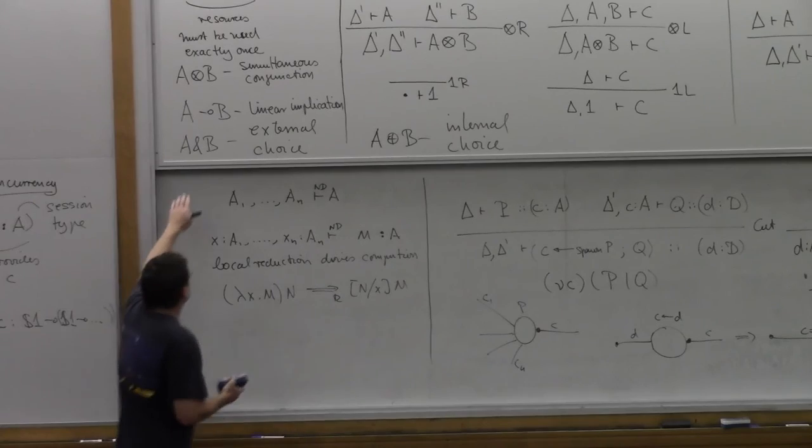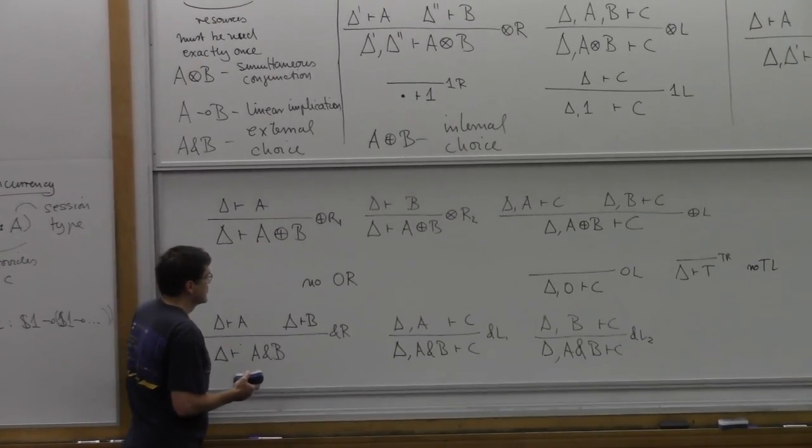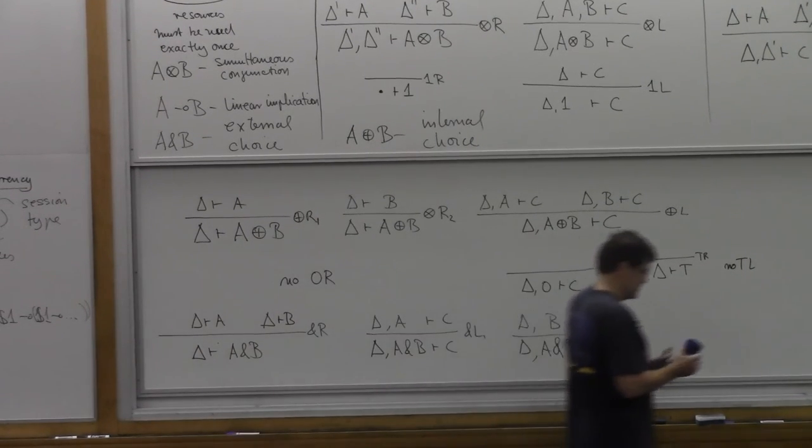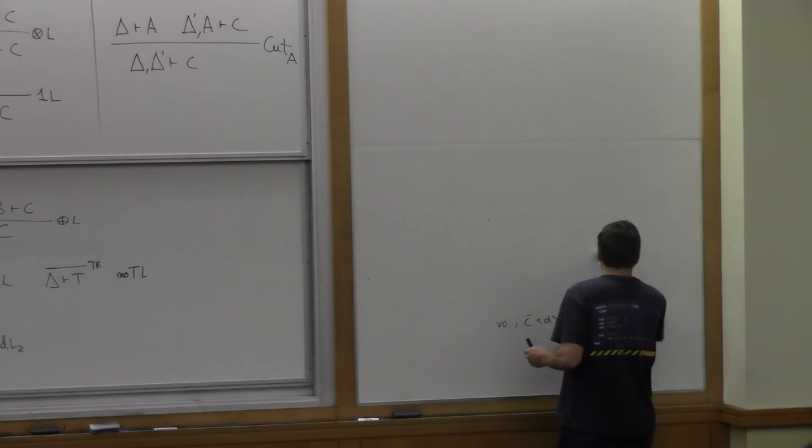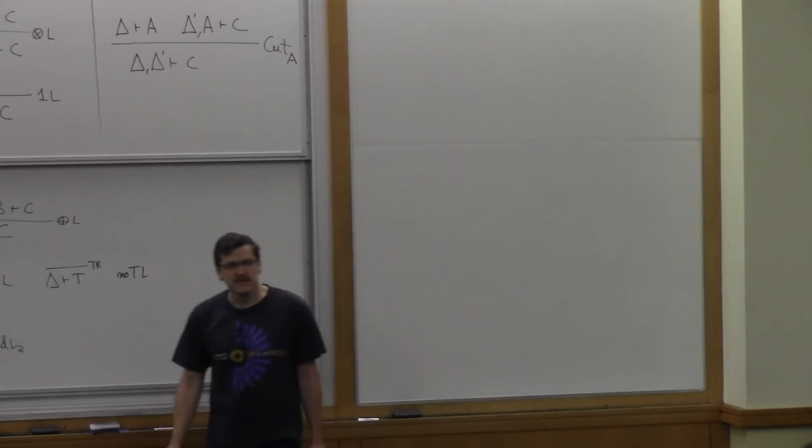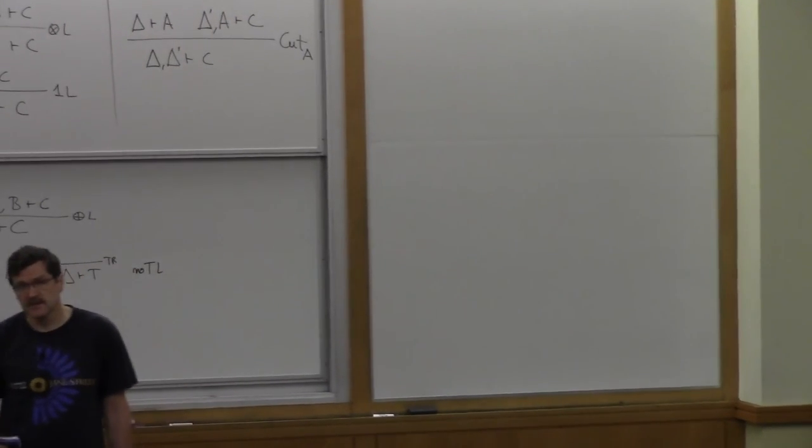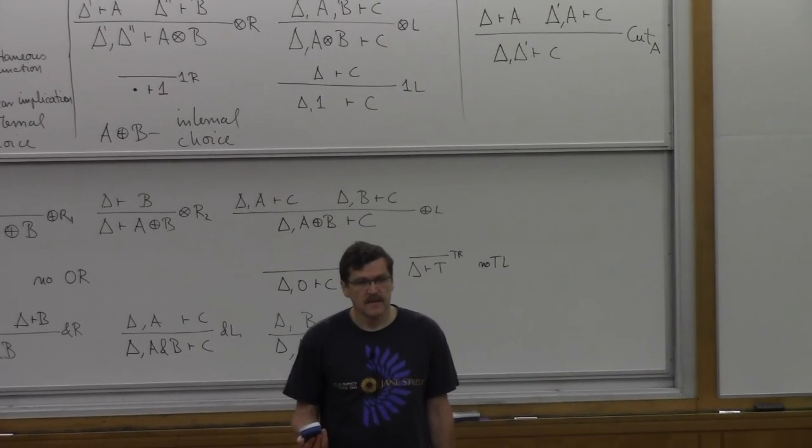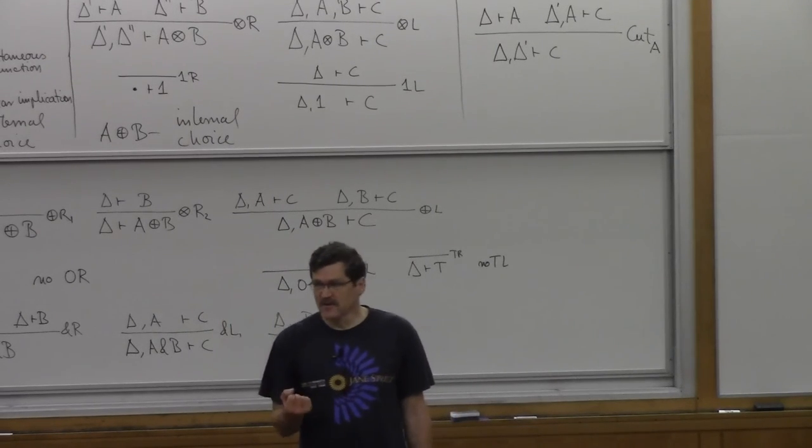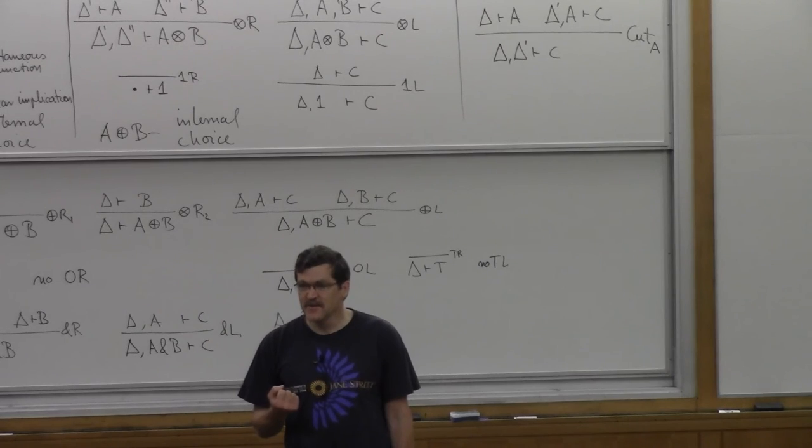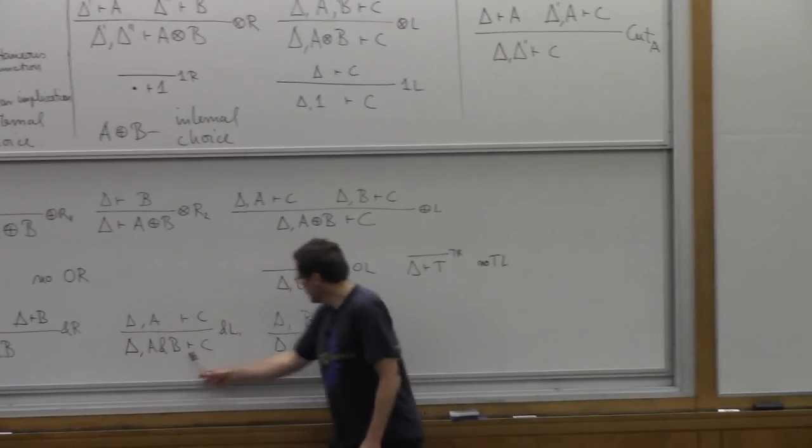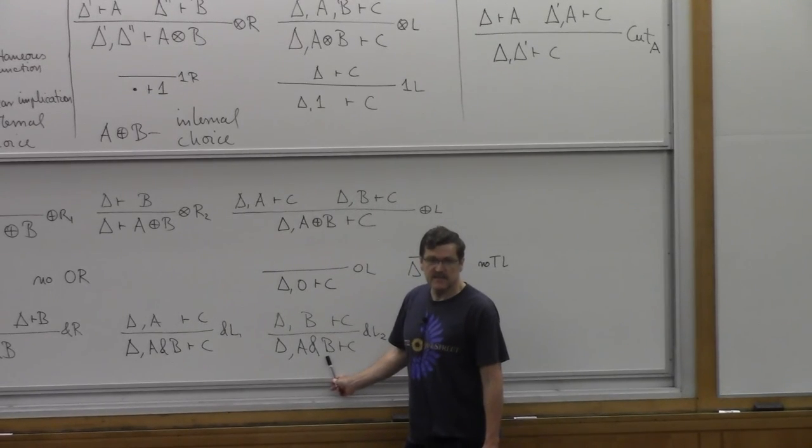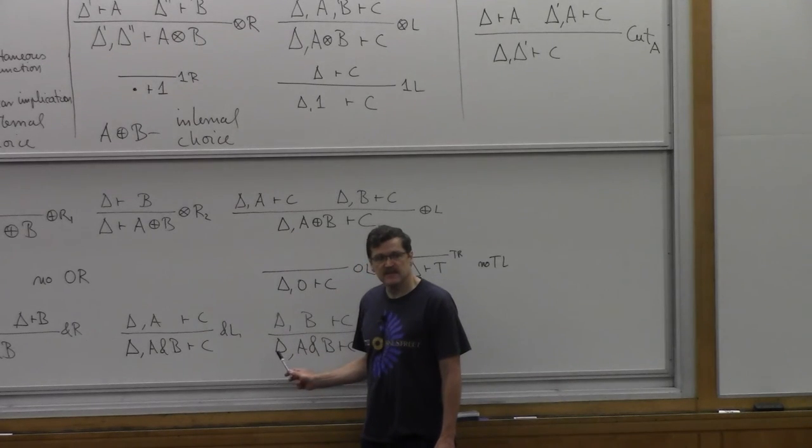Let's do external choice. So before I even start you should maybe be able to tell me what external choice is. Should external choice correspond to input or an output? A receive or a send? Well it has to be a receive right? Because you're offering the external world a choice so you have to receive because it has to make a choice.